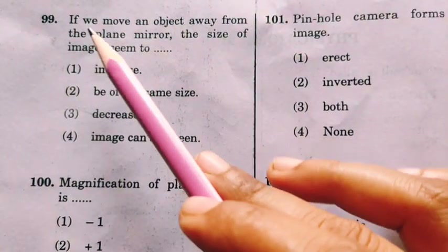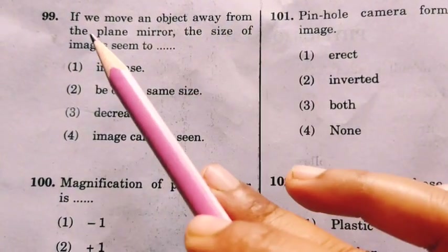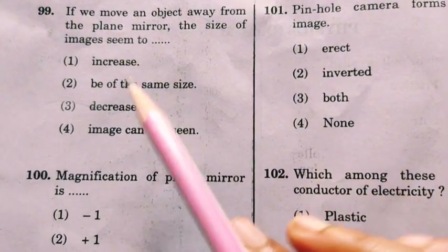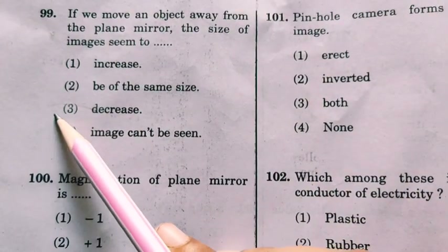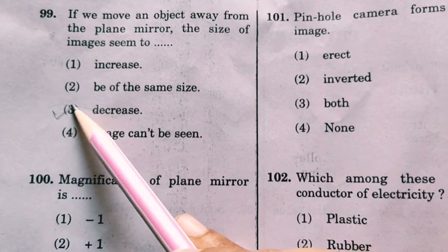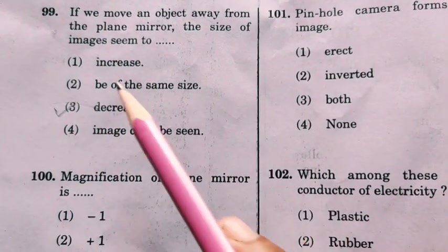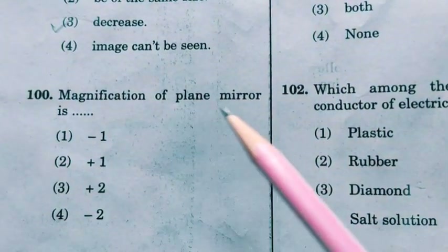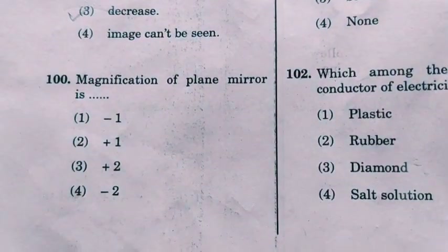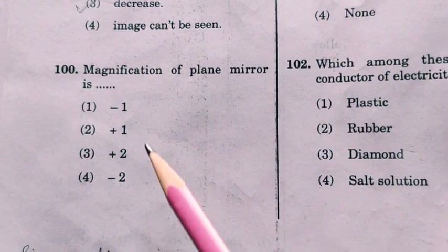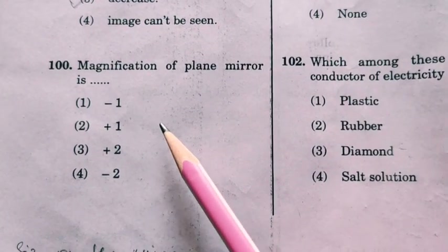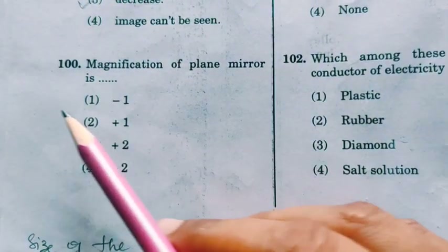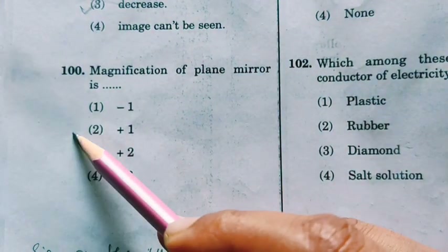Next question: if we move an object away from the plane mirror, the size of the image seems to decrease. If the object is moving away from the plane mirror, the size of the image seems to decrease. The magnification of a plane mirror is 1, because the size of the image equals the size of the object.